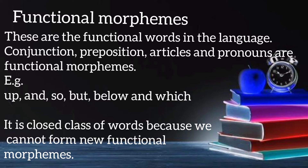Functional morphemes are the functional words in language. Words like conjunctions, prepositions, articles, and pronouns are functional morphemes — for example, 'up', 'and', 'so', 'but', 'below', and 'which' are all functional morphemes. It is also called a closed class of words because we cannot form new functional morphemes from these words.